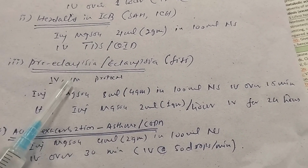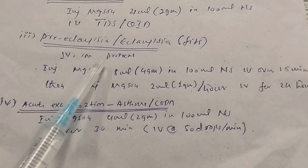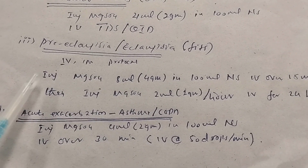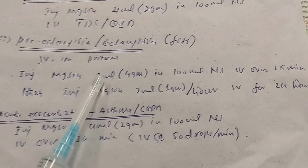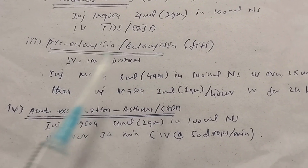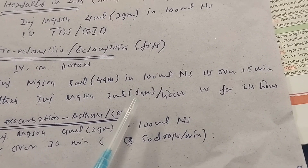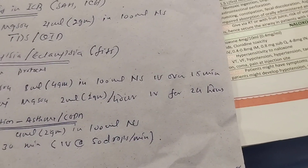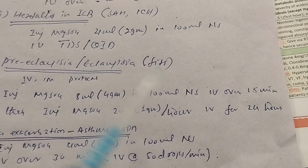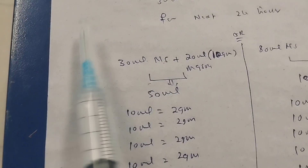For preeclampsia and eclampsia — to prophylactically prevent fits — there are two protocols: IM and IV. For the IV protocol, the loading dose is injection magnesium sulfate 8 ml (4 grams) in 100 ml normal saline IV over 15 minutes. The maintenance dose is injection magnesium sulfate 2 ml (1 gram) per hour IV for the next 24 hours.